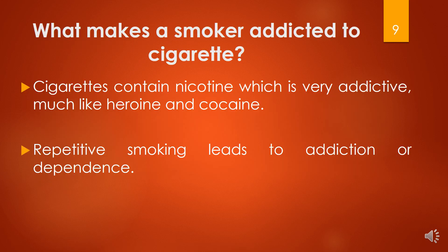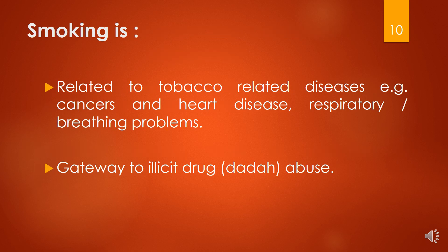What makes a smoker addicted to cigarettes? Cigarettes contain nicotine, which is very addictive — much like heroin and cocaine drugs. Repetitive smoking leads to addiction or dependency. Smoking is related to tobacco-related diseases such as cancer, heart disease, and breathing problems, and it is also a gateway to illicit drug abuse.